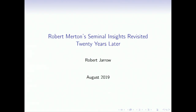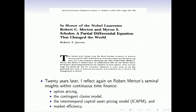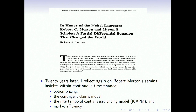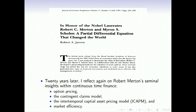I'm going to talk about Robert Merton's Seminal Insights, called Revisited 20 Years Later, because 20 years ago I was invited to write an essay on the contributions of the Black-Scholes and Merton option pricing model to finance — the academic finance world and the financial industry. So 20 years later, I'm now going to reflect on those seminal insights and add to them the continued claims model, the intertemporal capital asset pricing model — the ICAPM — and, with Eugene Fama in the audience, I'm going to make a connection of Bob's insights to market efficiency, if I have time.